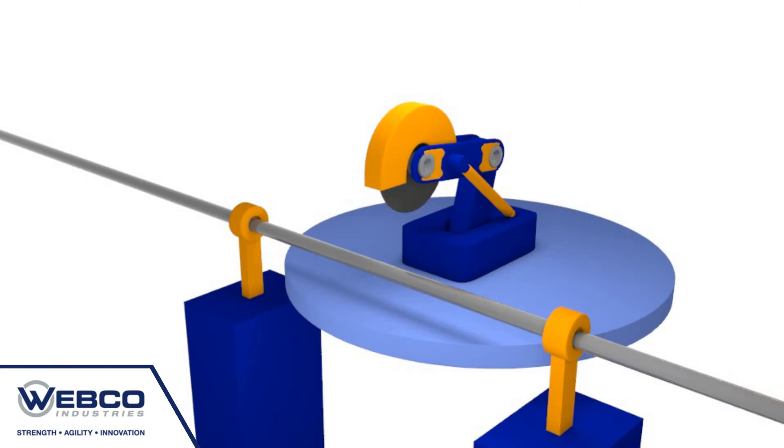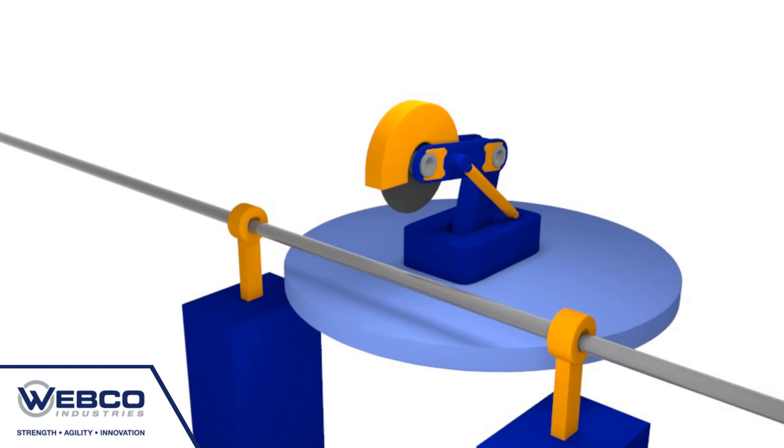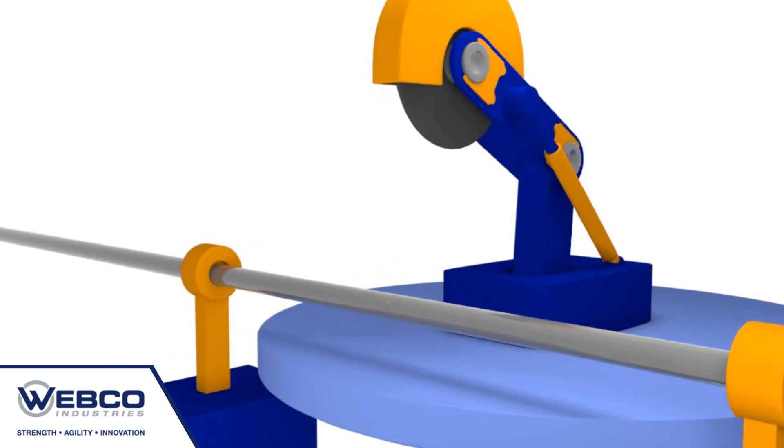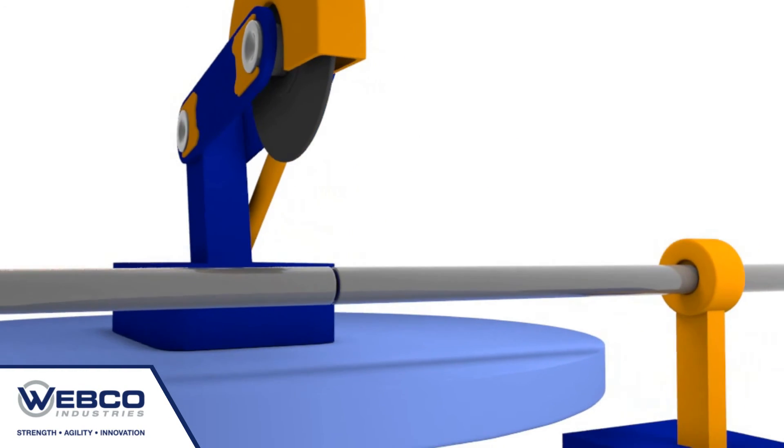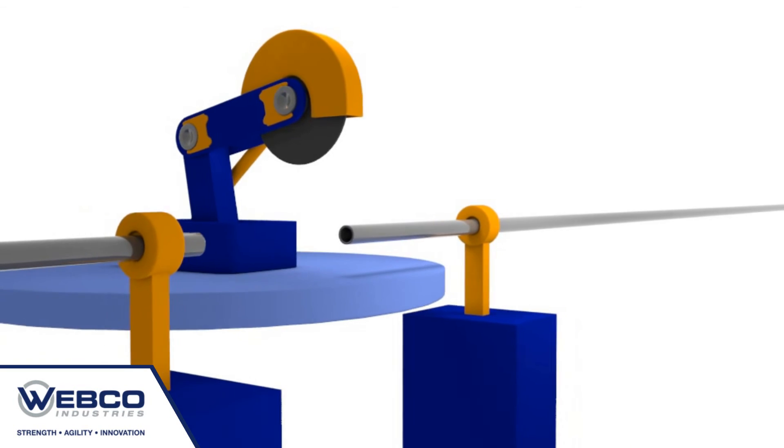An inline saw is programmed to cut straight-length tube orders to specified lengths. For coil tubing orders, saws can also be actuated at the operator's discretion, enabling precision cuts at precise lengths.